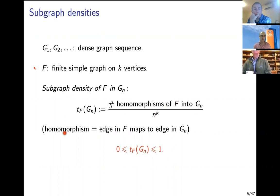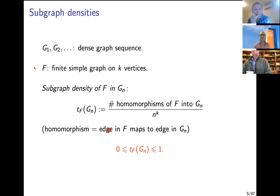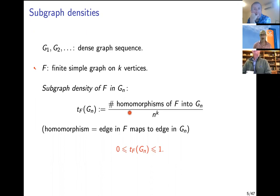By homomorphism I mean a mapping of the vertices of F into the vertices of Gn — typically n is large and k is small, so there are n^k such mappings, and they don't have to be injective. A homomorphism means edges map to edges, but we don't care about non-edges going to non-edges — so we're looking at subgraph counts, not induced subgraphs or motifs. By this normalization, the density ends up between zero and one.